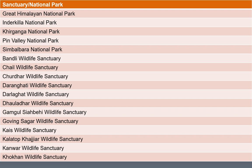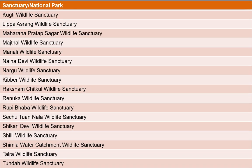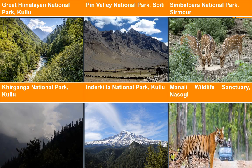Now the Sanctuaries and National Parks list. The famous ones are Great Himalayan National Park in Kullu, Pin Valley National Park in Spiti, Simbalbara National Park in Sirmour, Kheerganga National Park in Kullu, Inderkilla National Park also in Kullu, and Manali Wildlife Sanctuary and Nasogi.